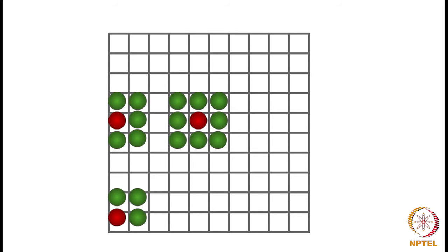The people in our model wish to have at least some other people of their own type as neighbors. We'll assume a common threshold t for each person. If a person discovers that it is surrounded by fewer than t people of its own type, it tends to move to a new cell. Such a person is called unsatisfied with their current location.